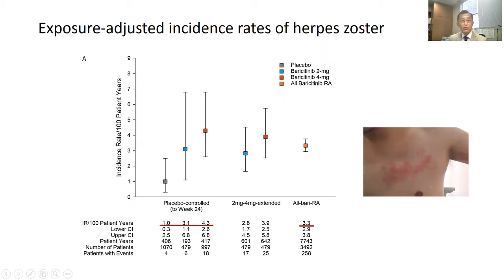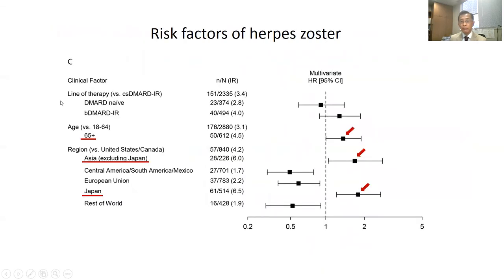The incidence rate of herpes zoster was higher for baricitinib versus placebo: 1.0 for placebo, 3.1 for 2 mg baricitinib, and 4.3 for 4 mg baricitinib, with P-value ≤0.01. Incidence rate remained elevated and stable over time, with an IR of 3.3 for all baricitinib. Herpes zoster risk factors include advancing age and region of enrollment.